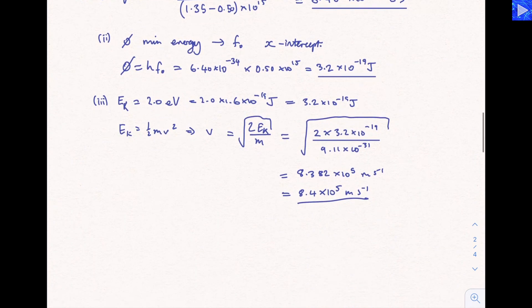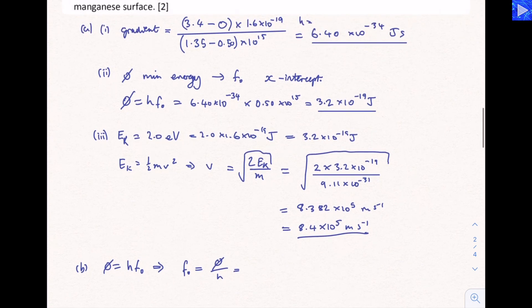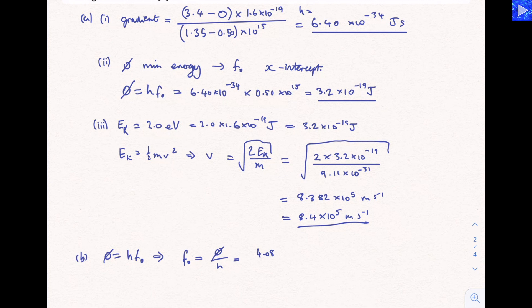But we do need to know where it intercepts on the frequency axis. So we need to take this work function and work out the threshold frequency that corresponds with that. Work function is HF0. So therefore, the threshold frequency for manganese is going to be work function over H. We use the same Planck's constant that we worked out before. So they said it was 4.08 eV. Turn that into joules by multiplying by 1.6 times 10 to the minus 19. Divide that by 6.4 times 10 to the minus 34. When we do that, that will give us 1.02 times 10 to the 15 hertz.